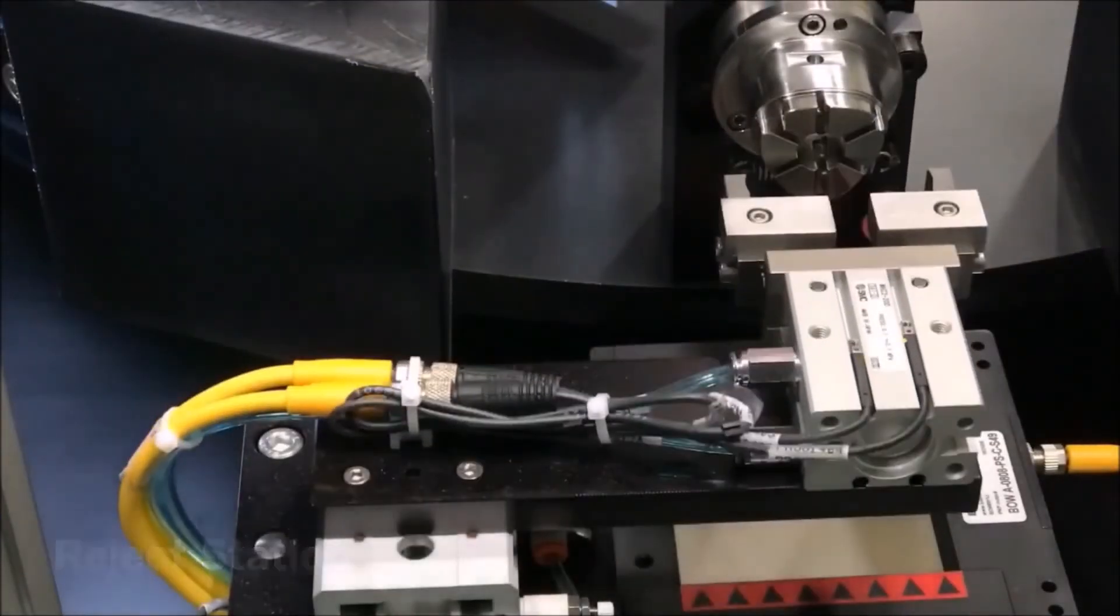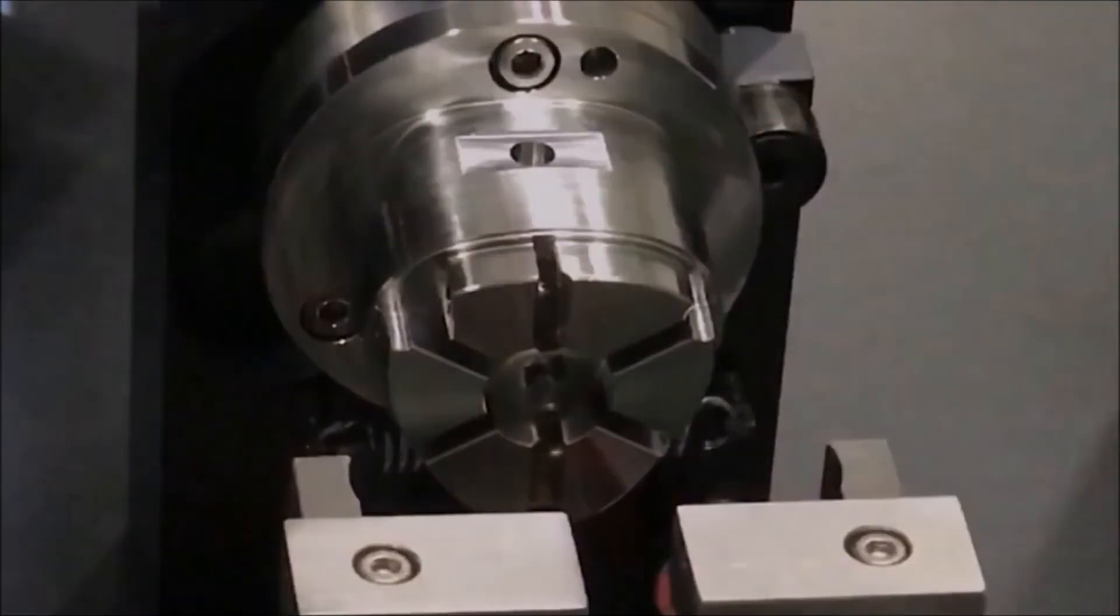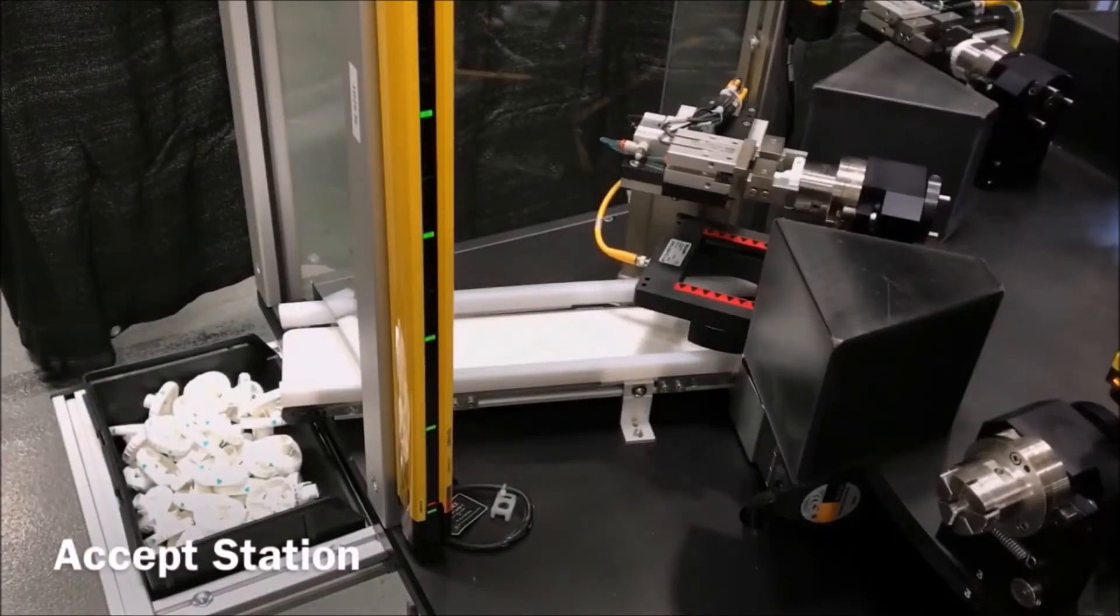The reject station removes any parts that do not pass quality checks from the inspection. These parts are isolated and counted for quality metrics.